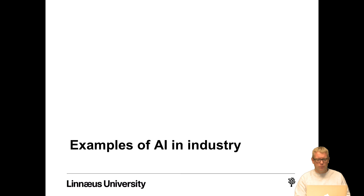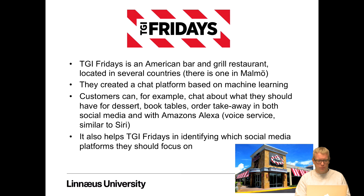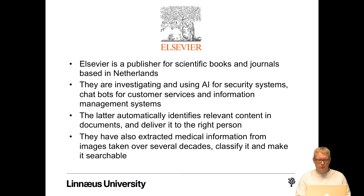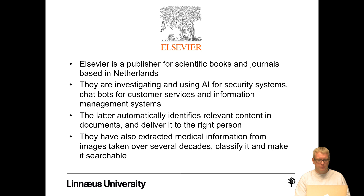Finally, some examples of AI in industry. TGI Fridays created a chat platform based on machine learning — customers can chat about what to have for dessert, book tables, or order takeaway through social media and Amazon's Alexa. It also helps TGI Fridays identify which social media platforms to focus on. They are also using AI for security systems, chatbots for customer service, and information management systems that automatically identify relevant content in documents and deliver it to the right person, as well as extracting and classifying medical information from images taken over several decades.